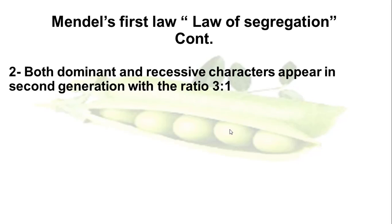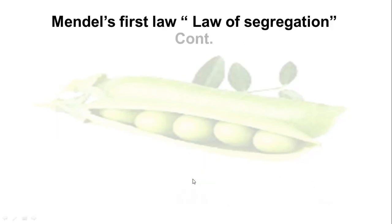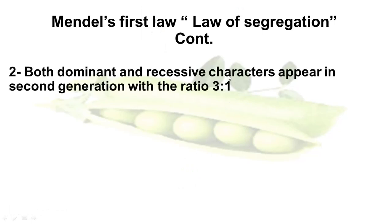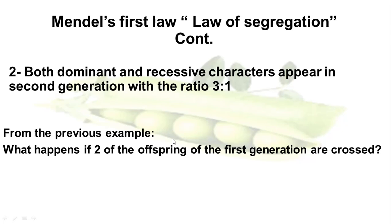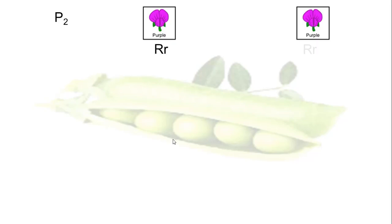In the second generation, both dominant and recessive characters will appear with a ratio of 3 to 1. We will take two flowers from the first generation and mate them together. If we have 4 flowers, 3 will be purple and 1 will be white. From the previous example, what happens if two offspring of the first generation are crossed? The parents of the second generation are two purple plants — are they homozygous or heterozygous? They are heterozygous because they are not pure.